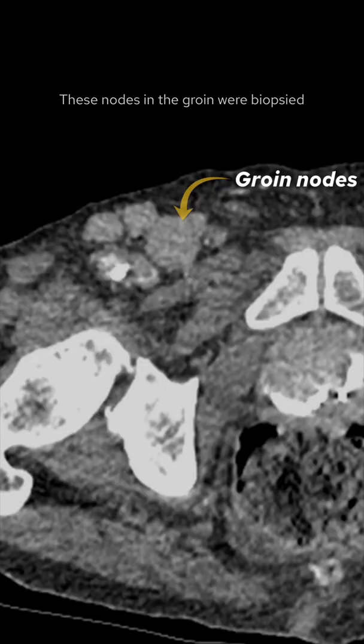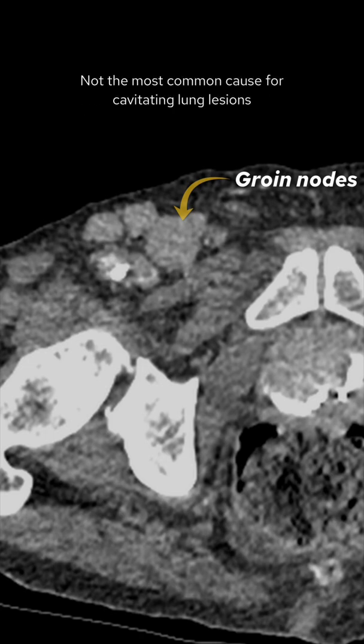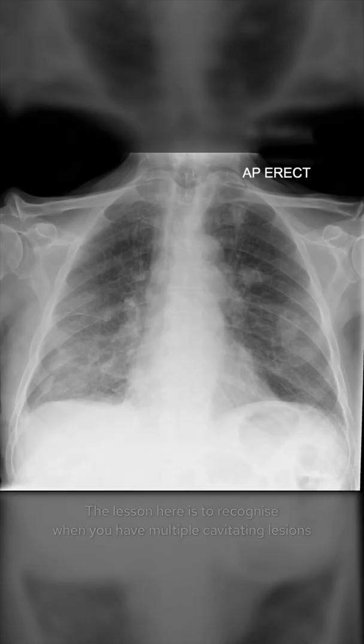The nodes in the groin were biopsied. This case turned out to be a metastatic neuroendocrine tumor — not the most common cause for cavitating lung lesions, and really only something that would be possible to diagnose on a biopsy.